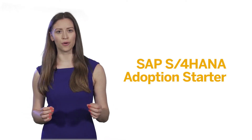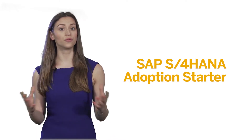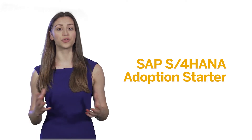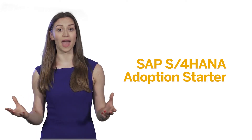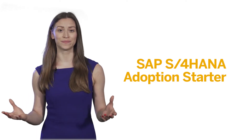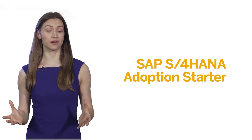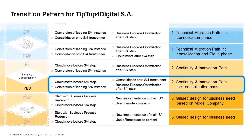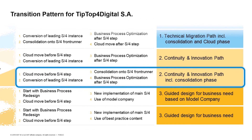The final step now is to convert all of this into the first version of a project plan and a timeline. To get there, we at SAP have come up with a workbook approach, which starts by using a decision tree to determine your transition pattern and corresponding project phases.